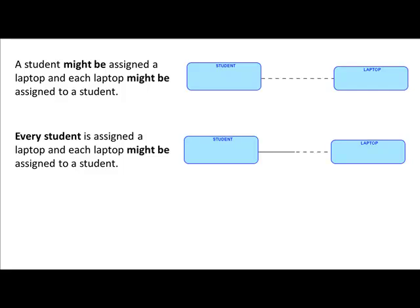The line has two parts — one half close to one entity type, and the other half close to the other entity type. We make a particular half solid if that corresponding entity type has to participate in the relationship. Since the laptop does not have to be connected to a student — there could be unassigned laptops — we put a dashed line on the laptop side.